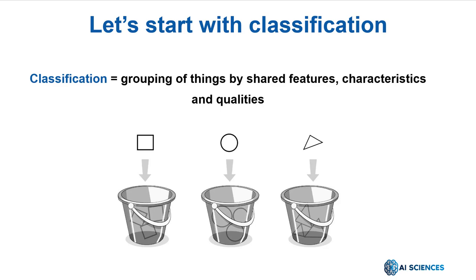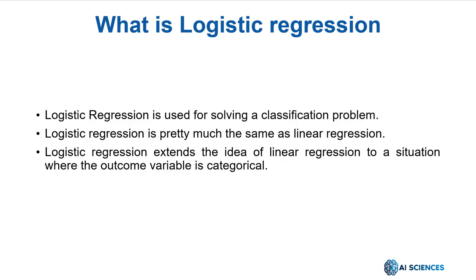Now, what is logistic regression? Logistic regression is among the most commonly used and best-known algorithms that we can use to solve a classification problem. It's named logistic regression because of the logit function, which is used in this method of classification. Other than that, logistic regression is pretty much the same as linear regression.